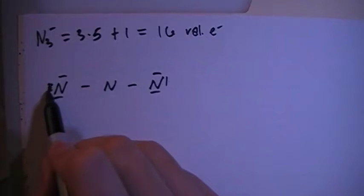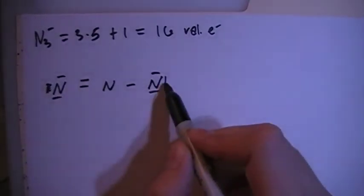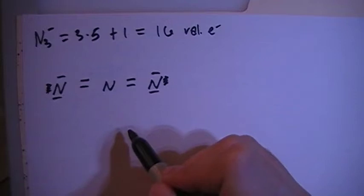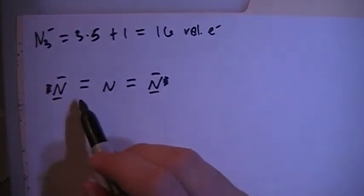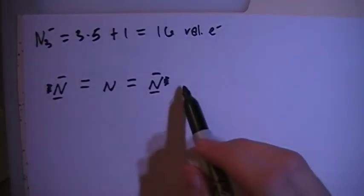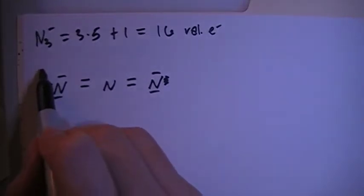So what we're going to do is move this non-bonding pair to make a double bond, and this non-bonding pair to make a double bond. So now there's 16 electrons, and every nitrogen in this structure has 8, which means their full octet is complete.